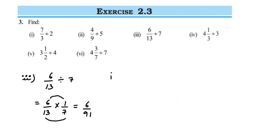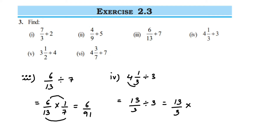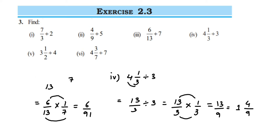Fourth question: 4 and 1/3 divided by 3. First convert to an improper fraction: 3 × 4 = 12, plus 1 = 13, so 13/3 divided by 3. The first number 13/3 remains the same, division becomes multiplication, and the reciprocal of 3 is 1/3. Multiply: 13 × 1 = 13 and 3 × 3 = 9, giving 13/9. Converting to a mixed fraction: 9 ones are 9, add 4 more to reach 13, so the answer is 1 and 4/9. You can also leave it as 13/9 — both are correct.